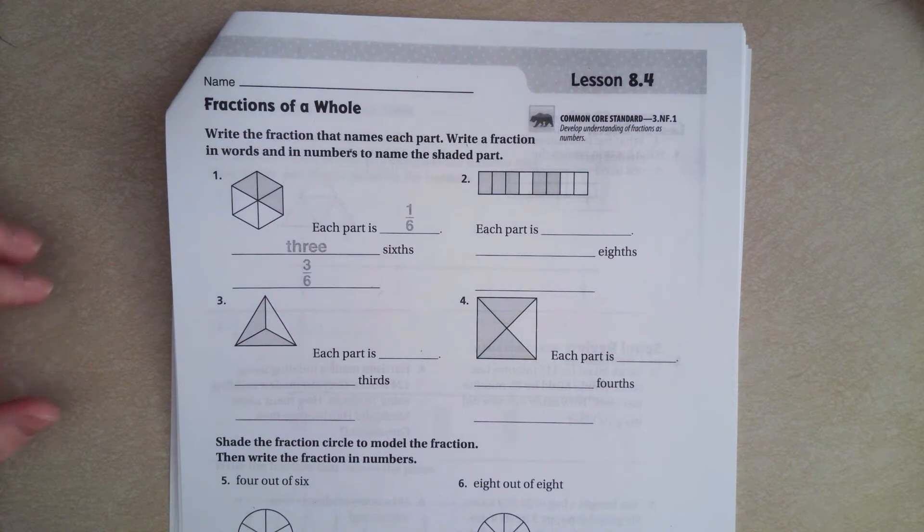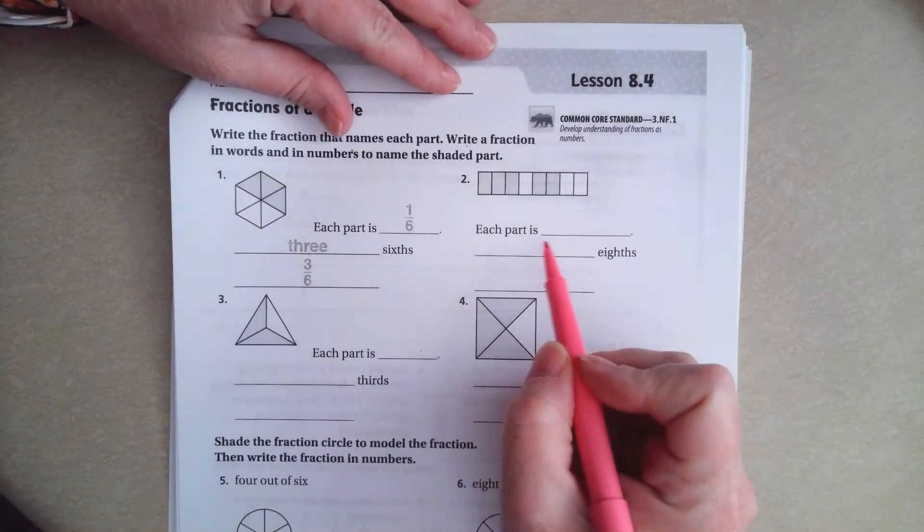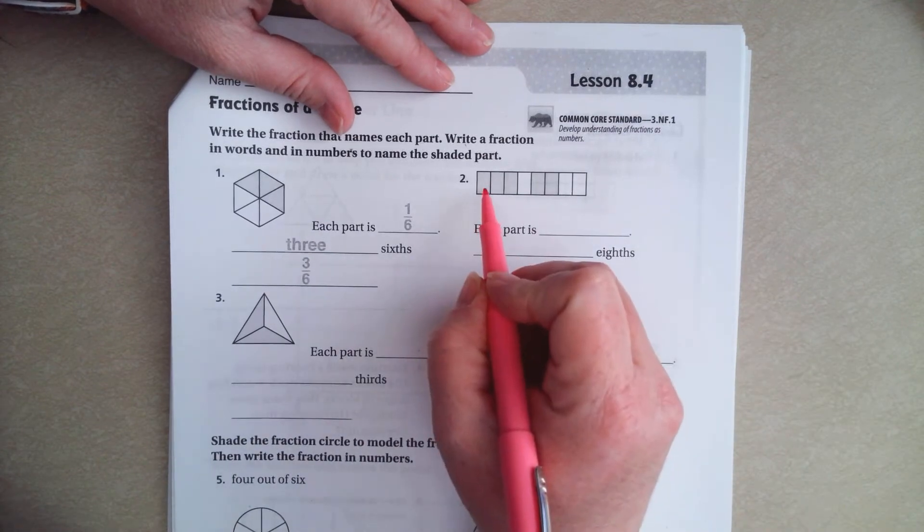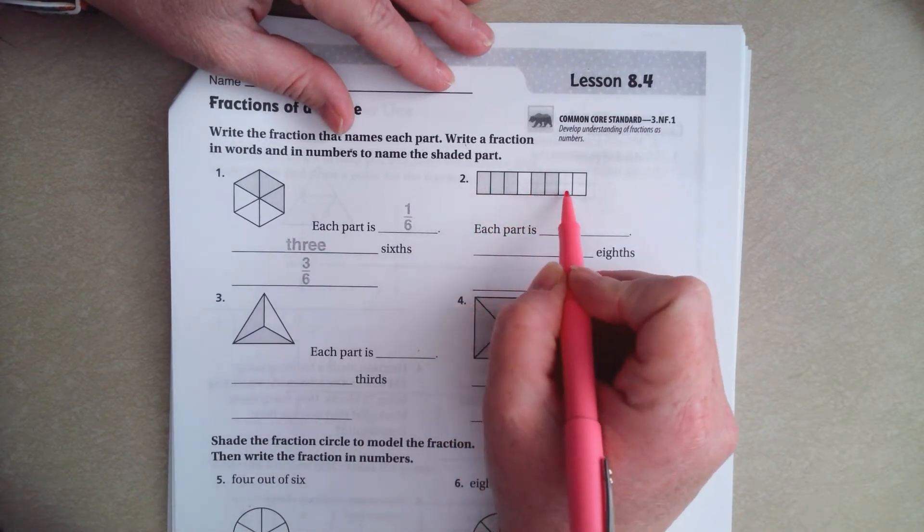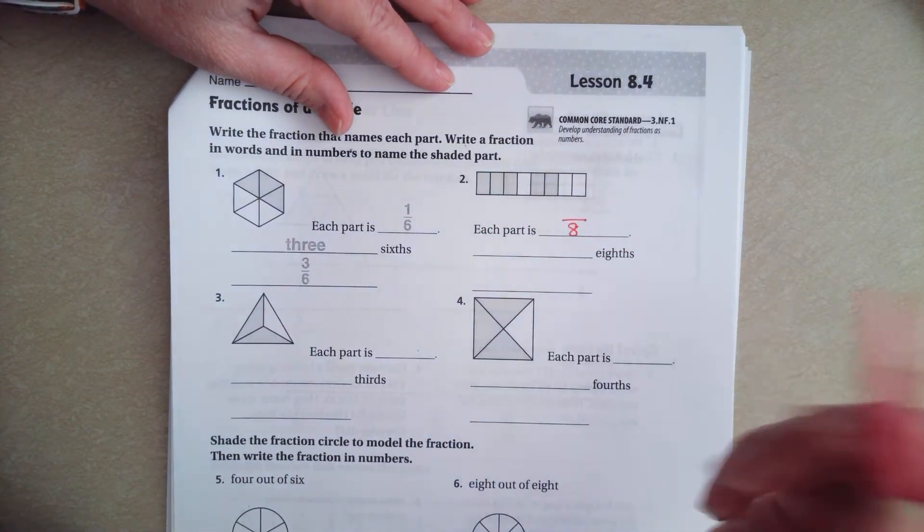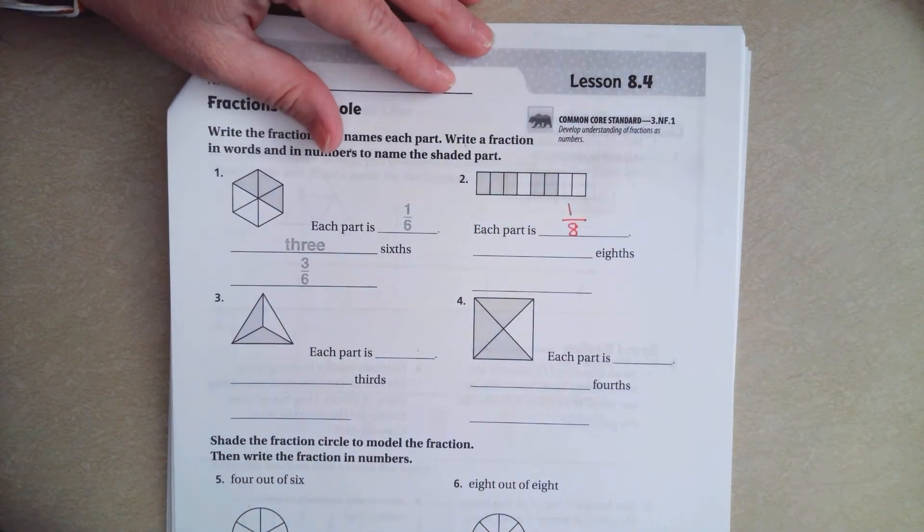We're going to go ahead and get started with number 2. So, this says that each one of these parts is how many eighths, really? So, there's 1, 2, 3, 4, 5, 6, 7, 8 parts. And each one of them is just going to be 1, so 1 eighth.